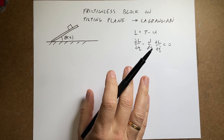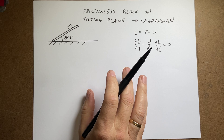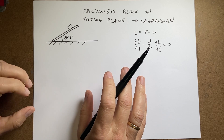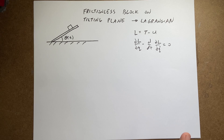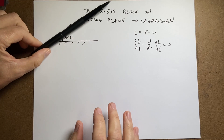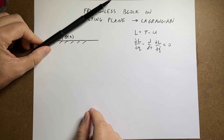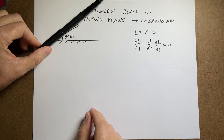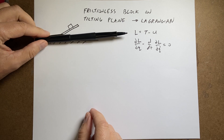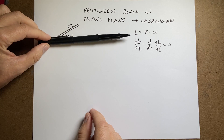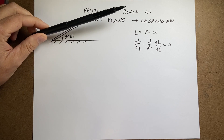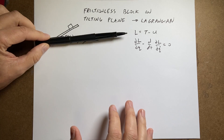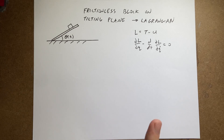The key to Lagrangian mechanics, and the place where it really shows its strength, is in situations that are constrained in some way. So here's the case I have: there's a plane with a block on it, and this plane can rotate. You could imagine it moving at a constant velocity so theta is omega·t, or it could jiggle back and forth. I'm going to do it generically — theta is not a constant number.